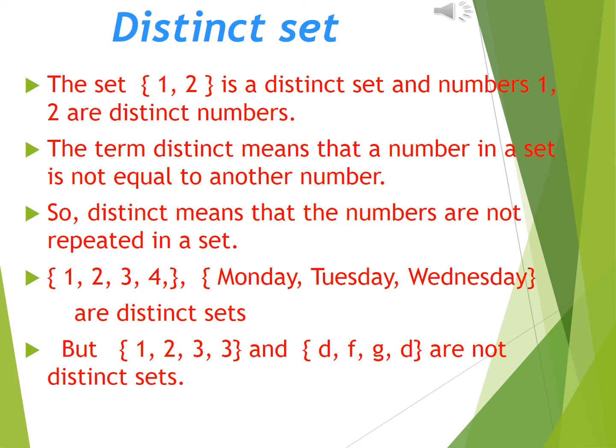The set {1, 2} is a distinct set and the numbers 1, 2 are distinct numbers. Distinct means separate. The term distinct means that a number in a set is not equal to another number. So distinct means that the numbers are not repeated in a set.